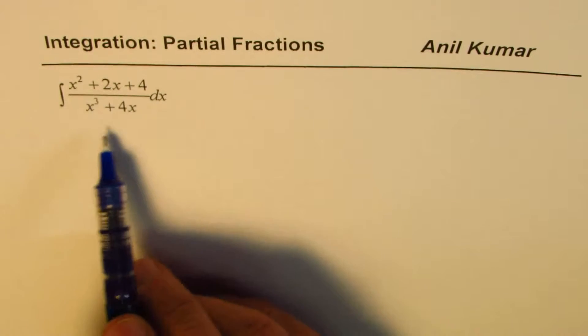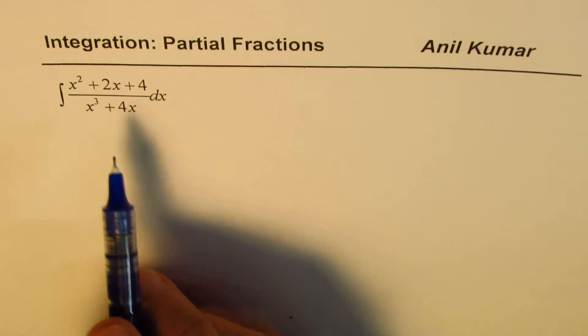We need to integrate x squared plus 2x plus 4 divided by x cubed plus 4x. Now, we can of course factor the denominator. So let's continue with that part.